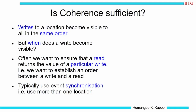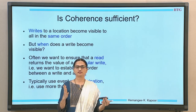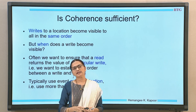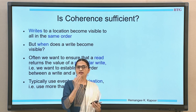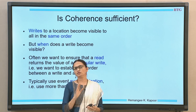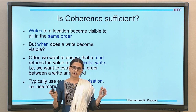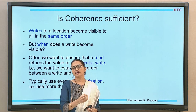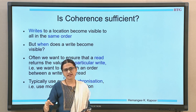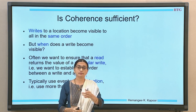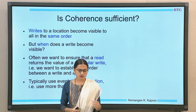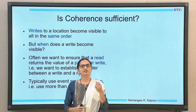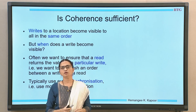Before we begin this topic, let us understand what coherence was. Coherence and consistency are the two things we need to satisfy in these parallel architectures. Coherence was guaranteeing a sequential order of accesses to a location — reads and writes interleaved across different processes. We make sure that when a write happens, all other copies get invalidated, and then the write takes place so subsequent reads get the newest written value.